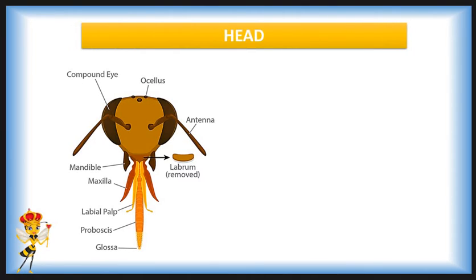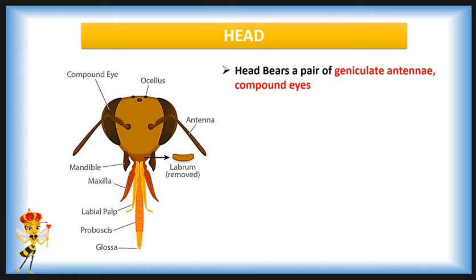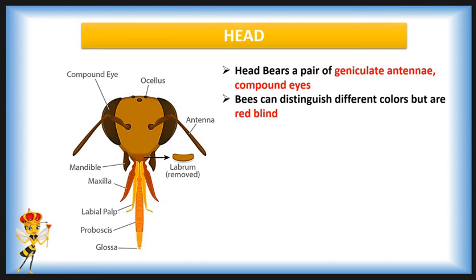We start from the head. The head bears a pair of geniculate type of antennae and two compound eyes on the lateral side of the head. Bees can distinguish different colors but are red-blind and can recognize ultraviolet light. The head also bears three ocelli, called simple eyes.